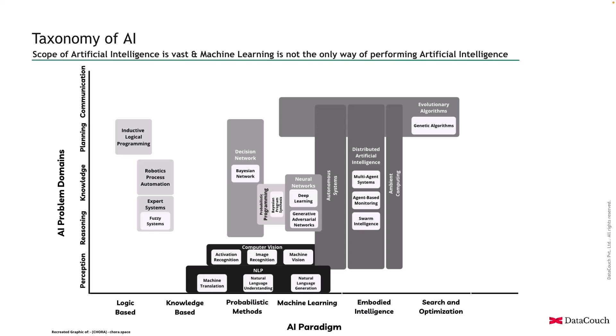Distributed artificial intelligence involves agent-based modeling, swarm intelligence, and multi-agent systems. Autonomous agents solve problems by distributing them to multiple agents that interact with each other. A great example is the drone shows in the Olympics, where drones coordinate with each other — that is distributed artificial intelligence.